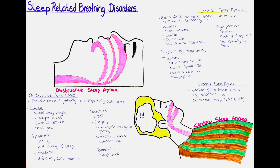The symptoms of complex sleep apnea can vary, but they often include loud snoring, episodes of interrupted breathing during sleep, frequent awakenings during the night, morning headaches, and excessive daytime sleepiness. People with complex sleep apnea may also experience mood changes, memory problems, and difficulty concentrating.